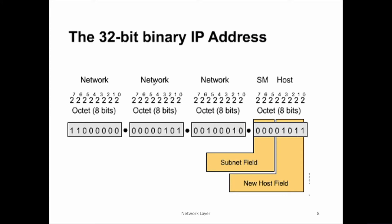The network part is assigned by the American Registry for Internet Names and Numbers — we cannot change it. So all we have is the host portion that we can play around with, or borrow bits from, in order to create subnets. For example, this is a Class C address where the first three octets represent the network part and the remaining octet represents the host portion. For subnetting, we can borrow bits from the host portion and these bits will become part of the network bits.